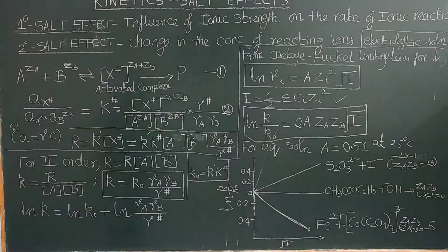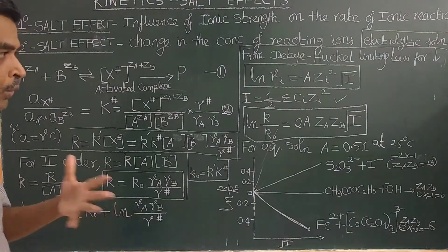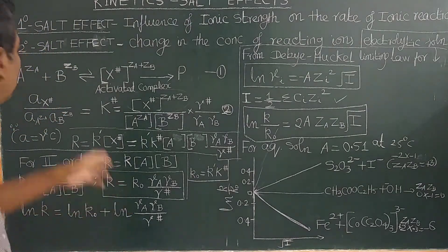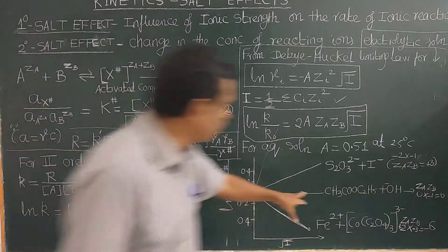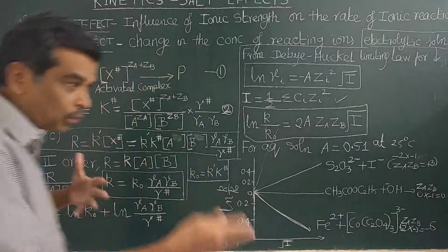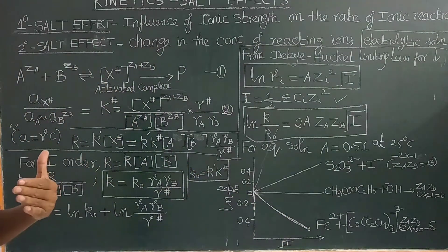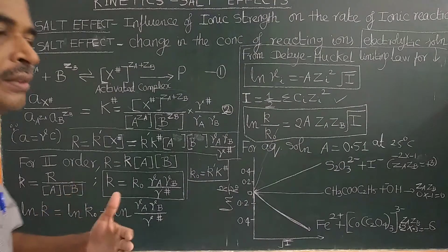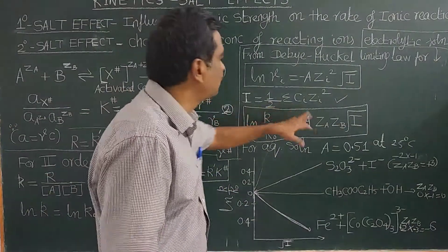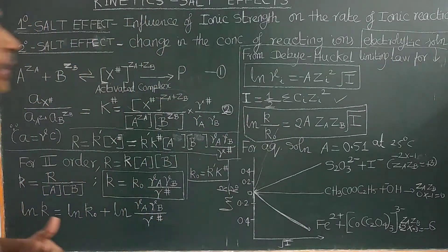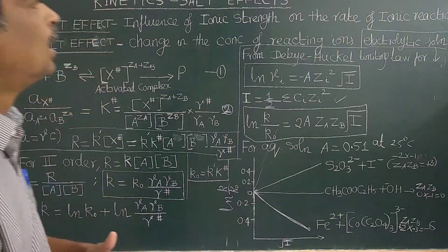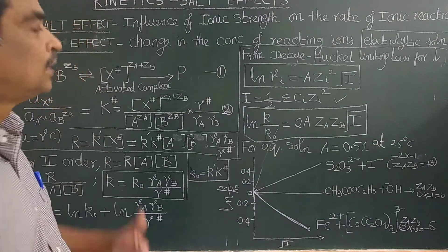For example, there will be no effect of added salt on the rate of reaction in the case of neutral reactants. If the two reactants are neutral, then addition of salt or increase in ionic strength will have no effect. Ionic strength is nothing but the addition of salt — if you add more salt, the ionic strength will be high. It is calculated by using a formula we have seen already in the electrochemistry video.